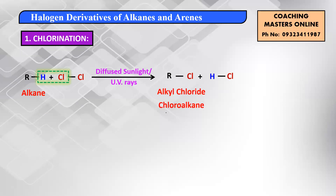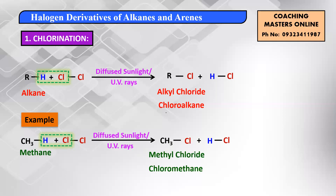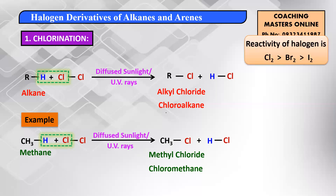So an alkane gets converted into an alkyl chloride. For example, take methane (CH4), written here as CH3-H. When you add chlorine in diffuse sunlight or UV radiation, H and Cl combine to give HCl, and CH3 combines with Cl giving you methyl chloride — so methane gets converted into methyl chloride or chloromethane.